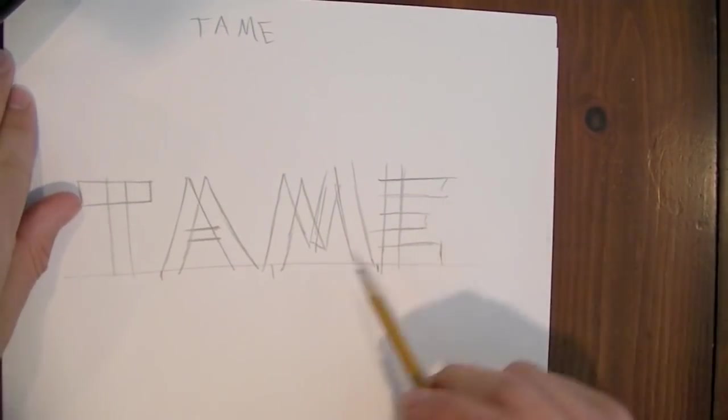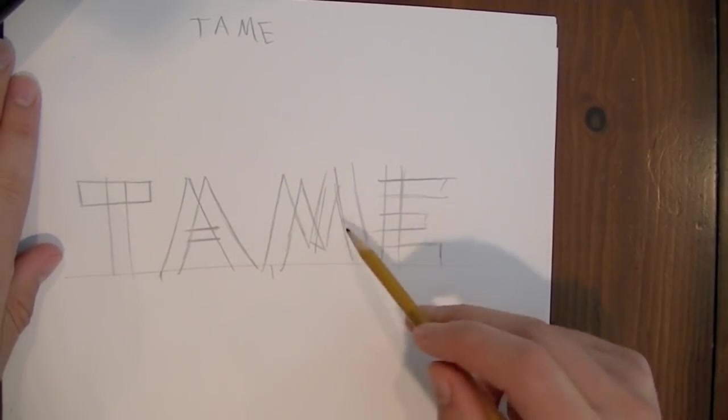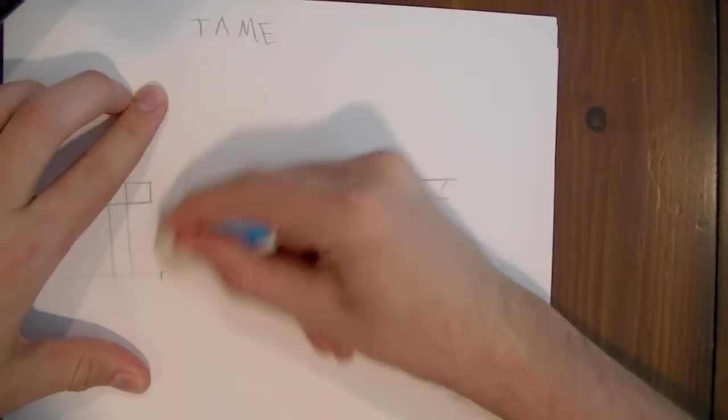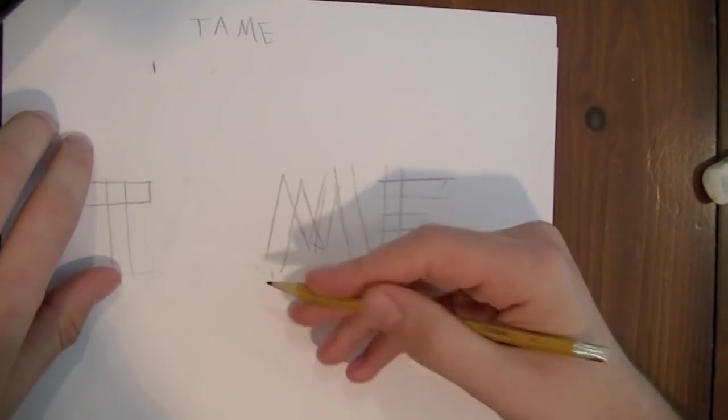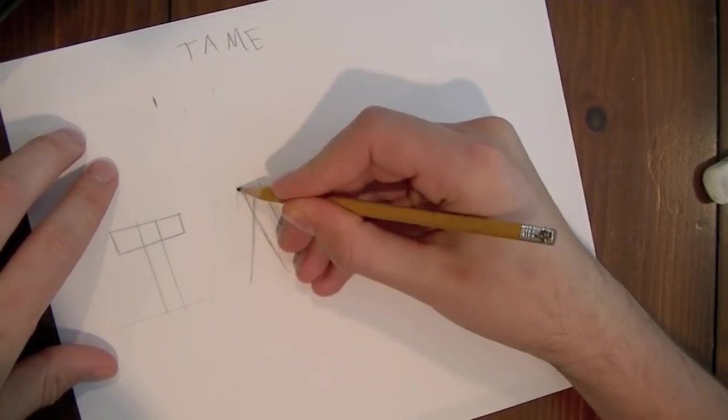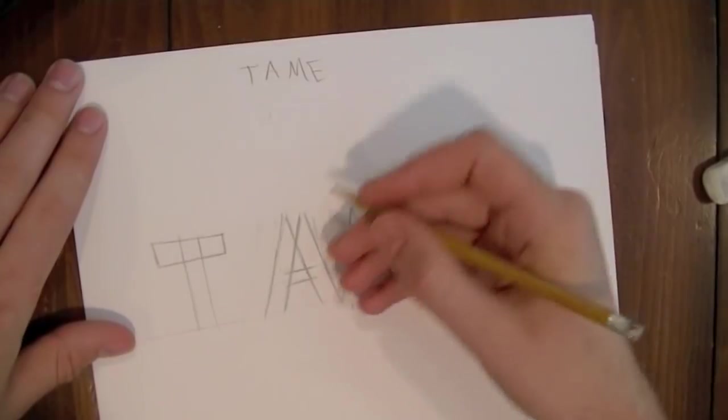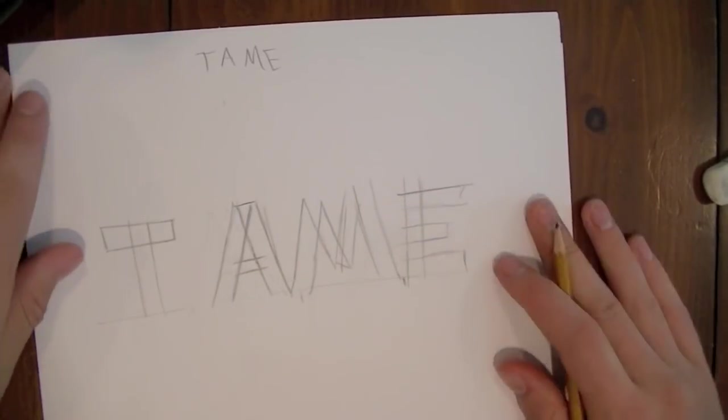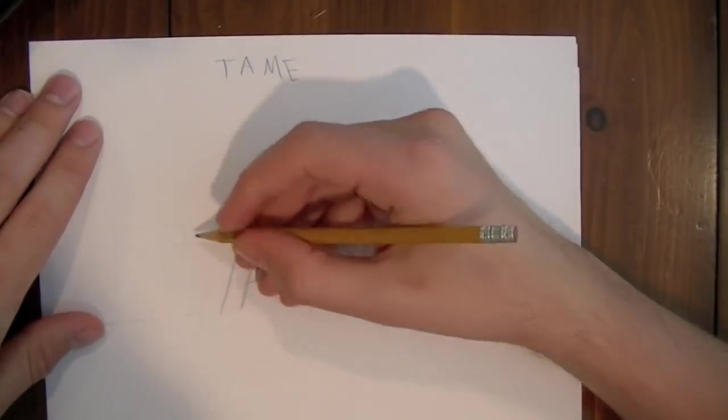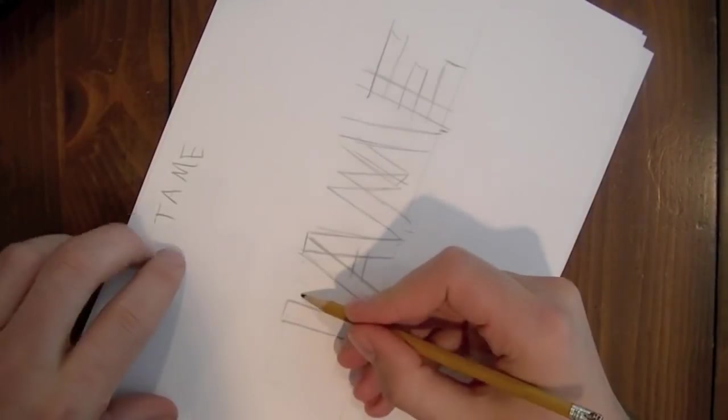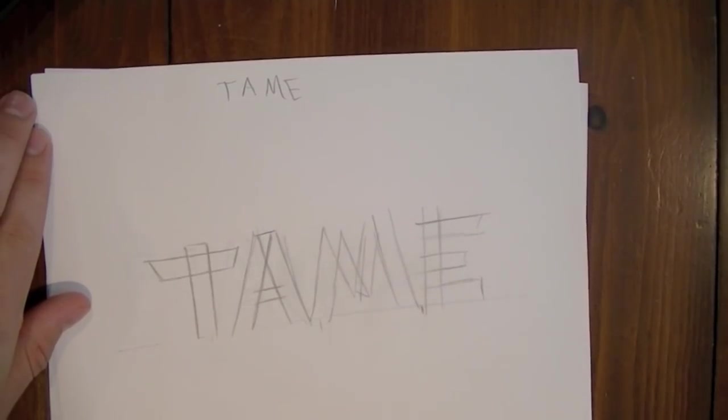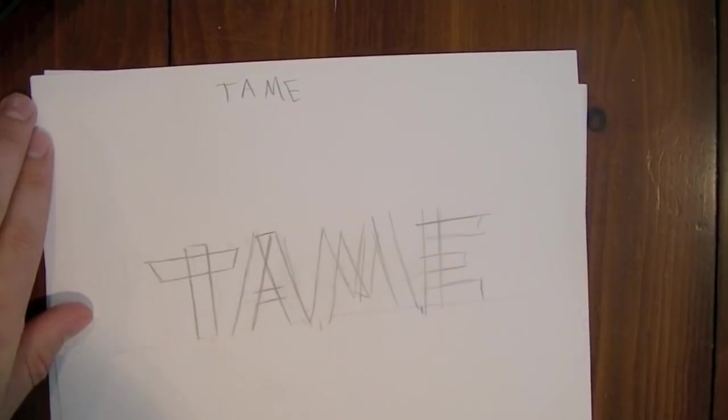But when I look at these letters, the M and the E look like they're buddies. They're sticking together. But it looks like the A's kind of keeping some distance from the M. So we're going to fix that. We're just going to totally delete this A from our page. We're going to redraw it a little bit closer to the M. That looks better. And now obviously our T's too far away, so we're going to fix that up as well.